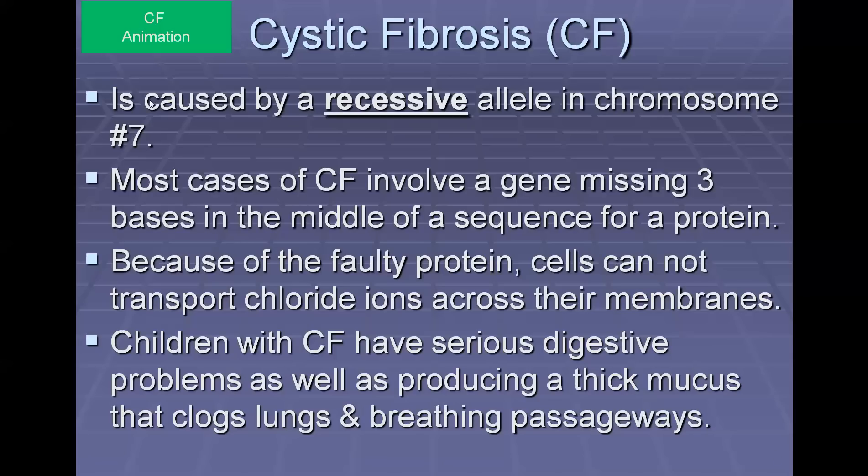Cystic fibrosis is caused by a recessive allele, meaning it's going to be masked by a dominant trait, so it's not going to be quite as prevalent in the population. In most cases, CF involves a gene that's missing three bases in the middle of a sequence for a protein. When you miss those three bases, you lose a couple of amino acids.